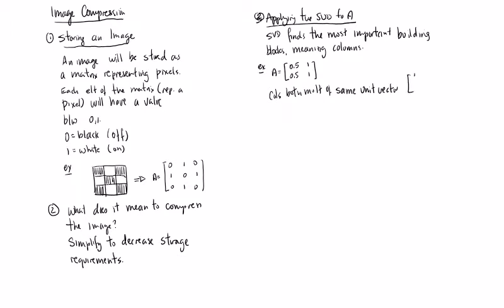Specifically, the same unit vector—that unit vector is 1 over root 2, 1 over root 2. Both of the columns in A can be written as a multiple of that.